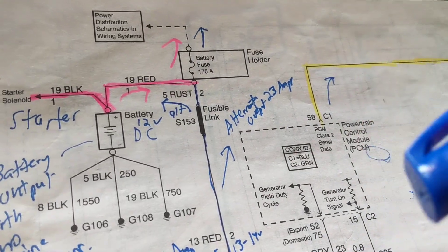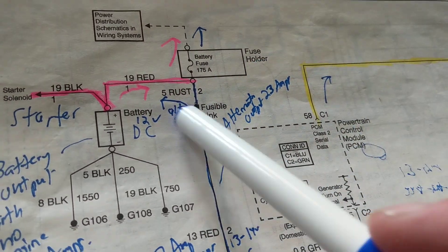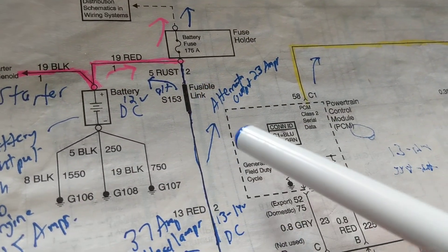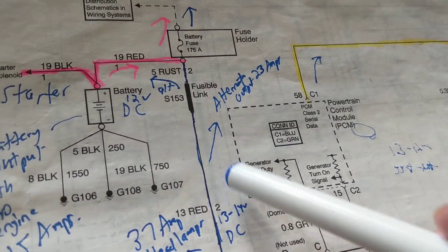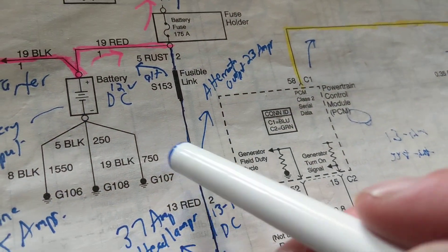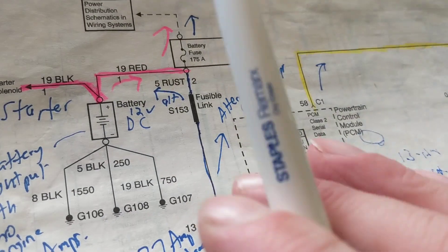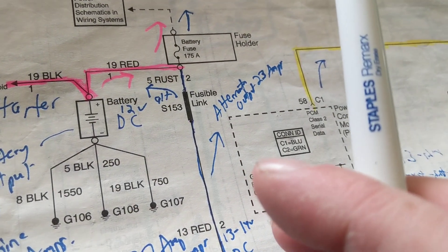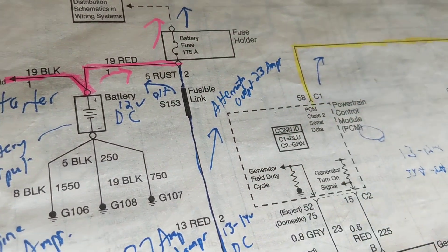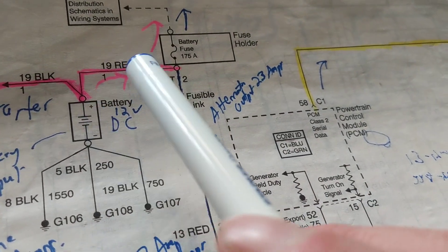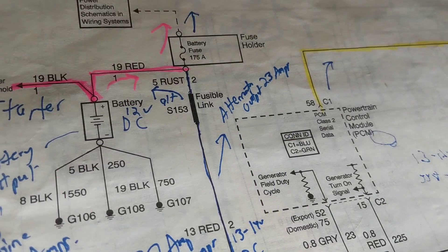Now if this is open, the fusible link is open, and we lose the alternator, it depends on how long it charged the battery. You can have 12 volts output from the alternator to the battery and the car will still function, depending on the reserve capacity, depending how much this was charged up.